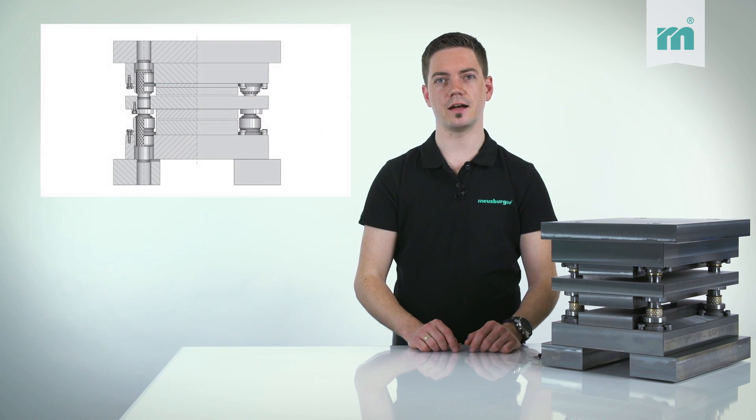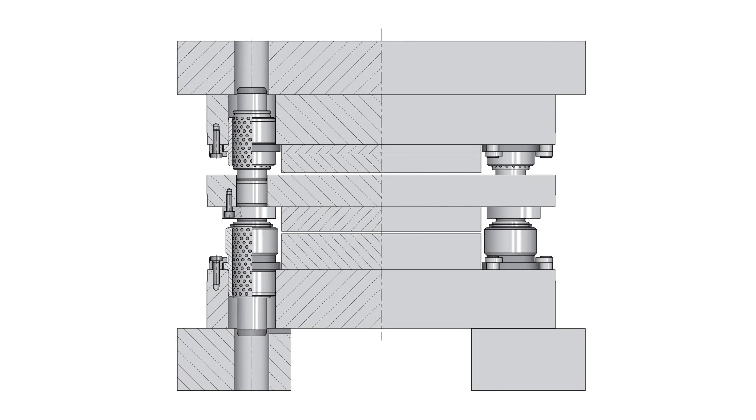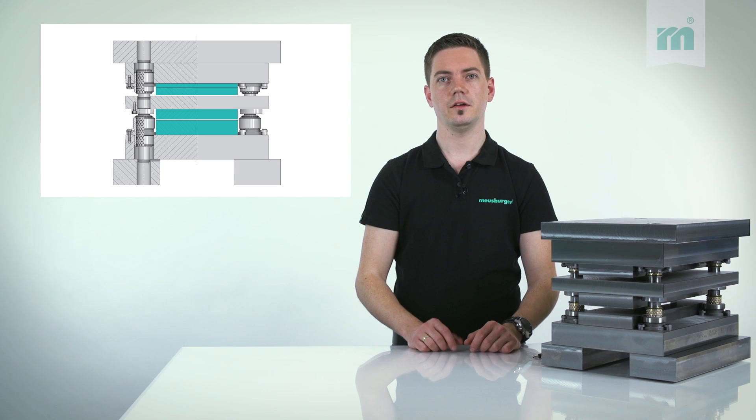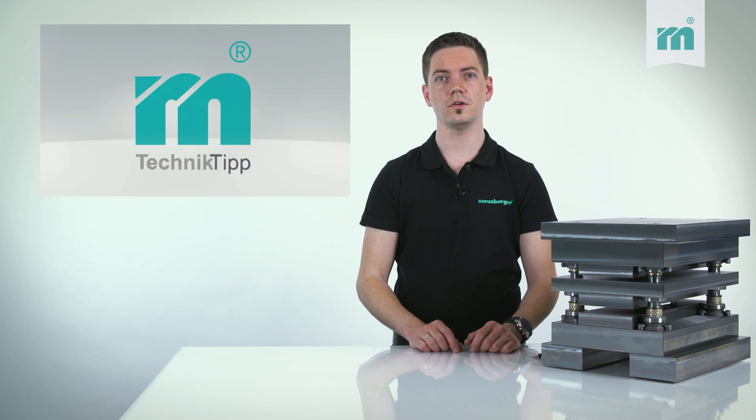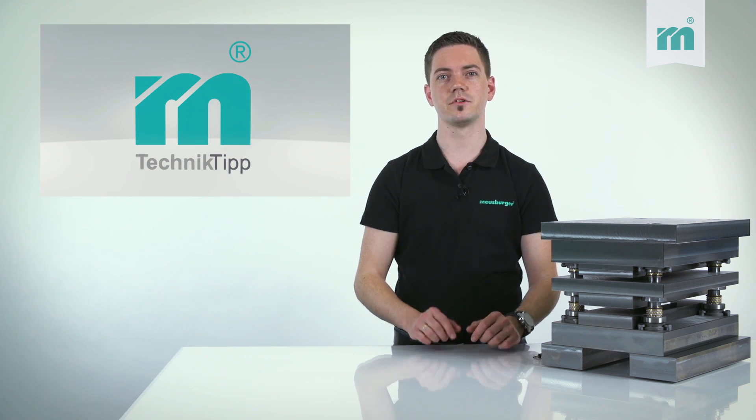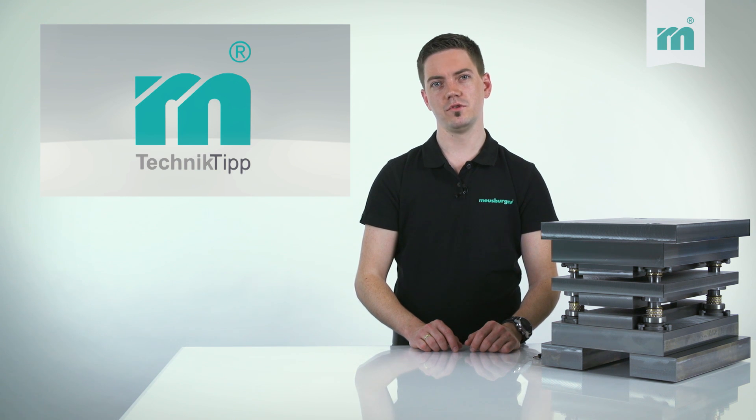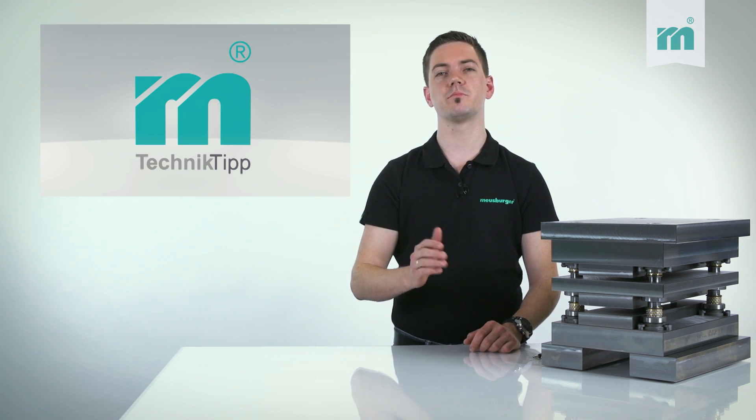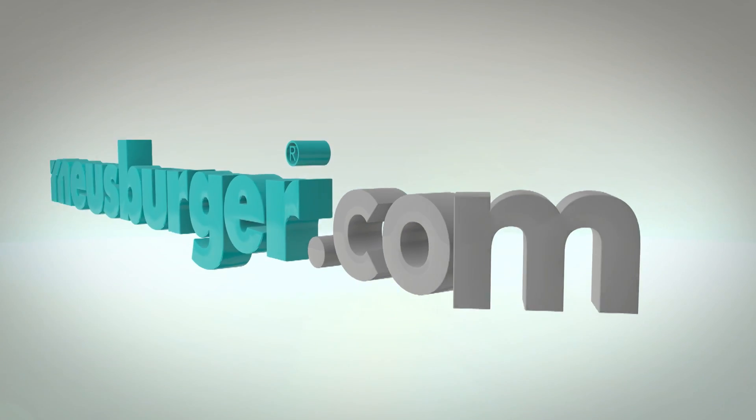A further advantage resulting from this is that the guiding diameter can be dimensioned smaller and thus there is more usable surface with the same size of die set. There is little price difference between the two die sets. Therefore, if you require higher precision and more space, we certainly recommend the use of a SP Precision Die Set.